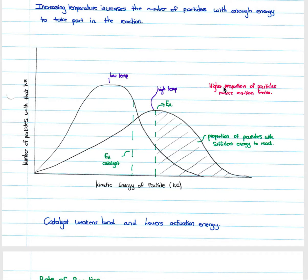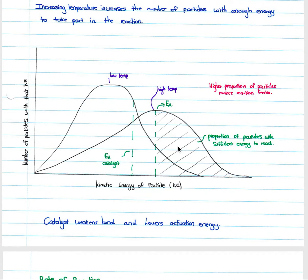A higher proportion of particles able to react gives a faster reaction. At low temperature, only particles to the right of the activation energy threshold Ea will react. At higher temperature, far more particles have sufficient energy to exceed Ea, because particles have greater kinetic energy and can therefore take part in successful effective collisions.